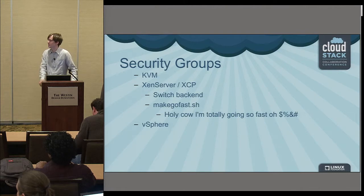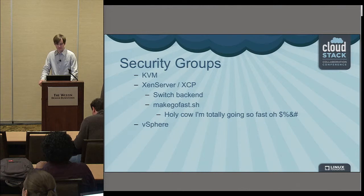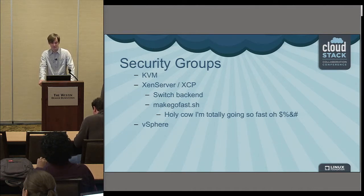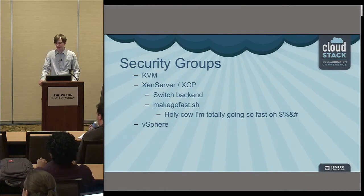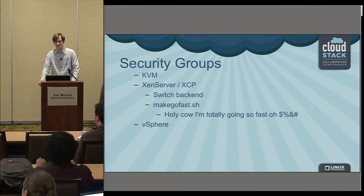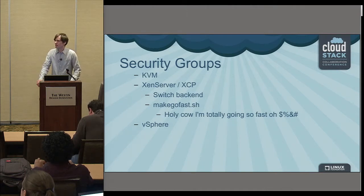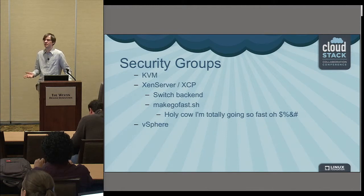With vSphere, if you're using security groups, I have bad news — it doesn't work at all, it's not supported. For troubleshooting with KVM and XenServer, you can check iptables and ebtables on the host itself because security groups are just firewall rules at the host level. You might find there's a problem with one host, and live-migrating a VM to another host where it works can help you narrow things down.